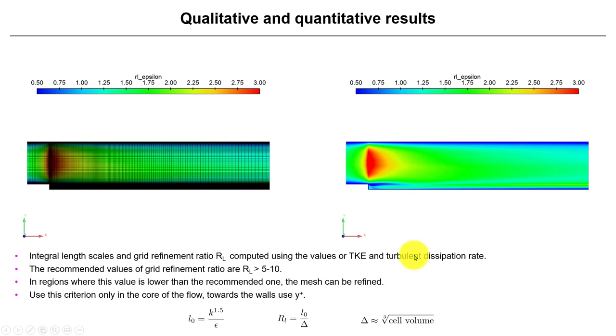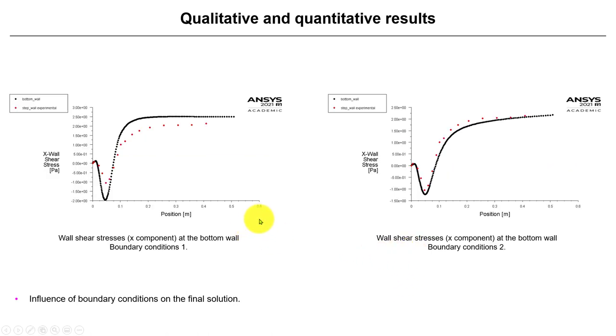We're going to plot the shear stresses at the wall. You have the experimental data, and see here two results. Even if you see we capture the trend, you can do much better. See that here we have very good agreement, and the difference here is exactly the same mesh but with two different boundary conditions, just to show you the influence of boundary conditions.